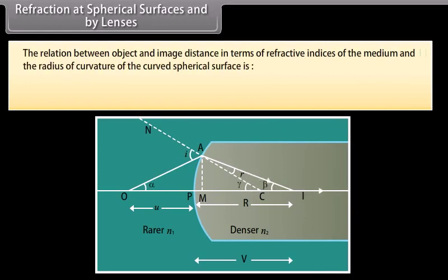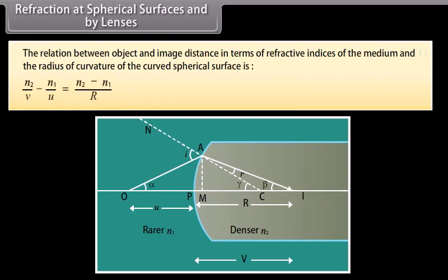The relation between object and image distance in terms of refractive indices of the medium and the radius of curvature of the curved spherical surface is: N2/v − N1/u = (N2 − N1)/R.